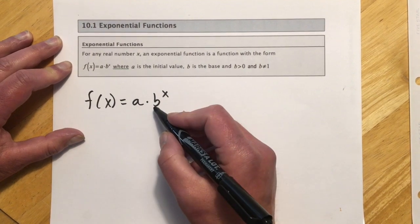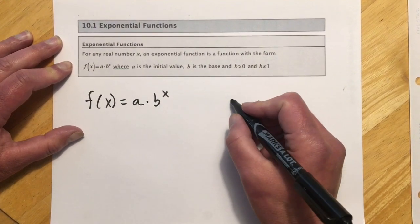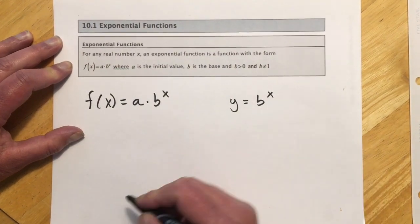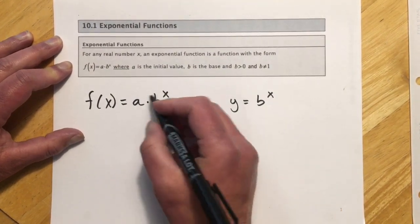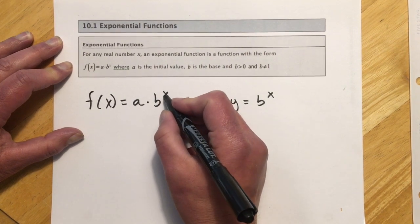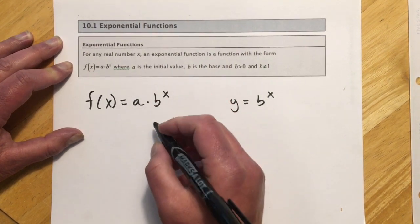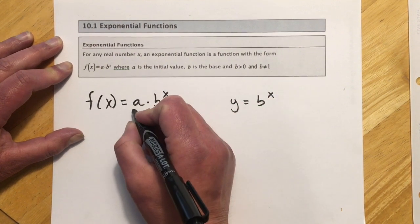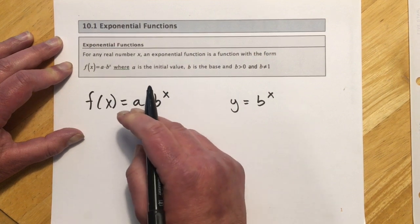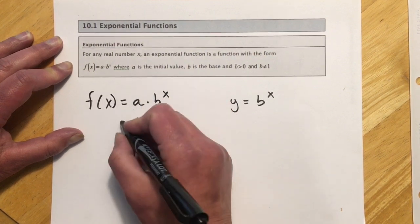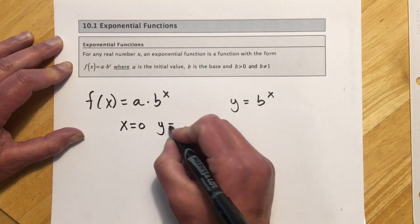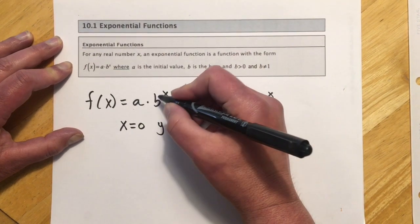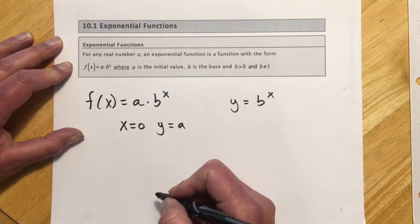Remember an exponential function looks something like this. We also saw simpler forms when we were graphing and evaluating. The basics: b is the base, x is the exponent, so we're plugging into the exponent. And if it has an a, remember that this is the initial value — the starting amount when x equals 0, y equals a. That's because something to the 0 makes 1, so it makes the output.